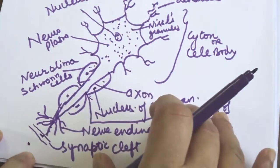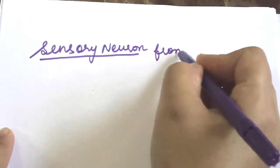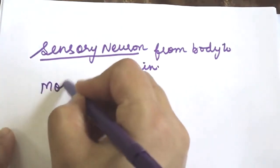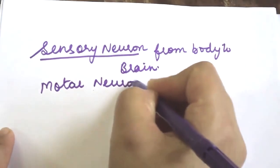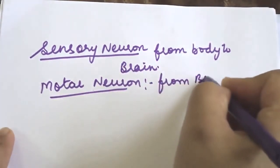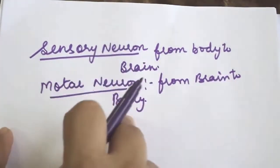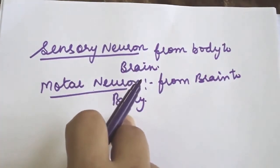A neuron can be sensory or motor. Sensory neurons conduct messages from the body to the brain. Motor neurons carry the response back from the brain to the body parts, indicating what reaction or action needs to be taken.